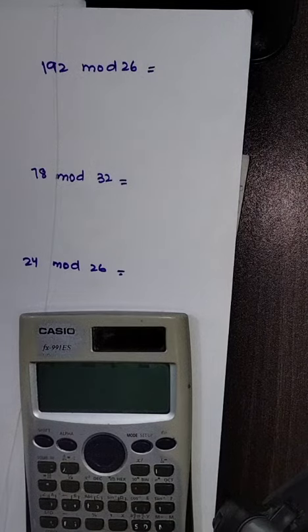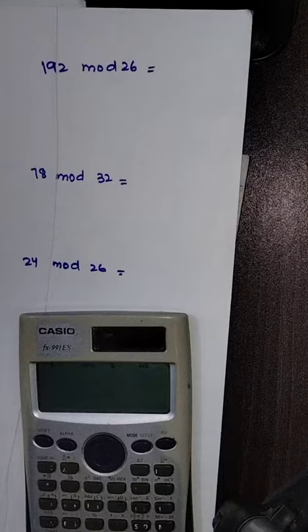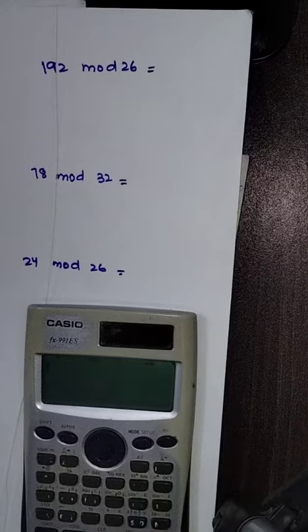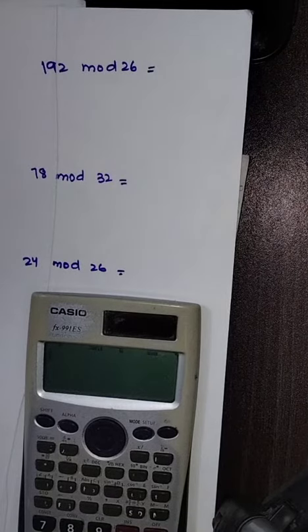In this video we will discuss how to take mod using a scientific calculator. We have three questions here: 192 mod 26, 78 mod 32, and 24 mod 26. So we are going to find out 192 mod 26 first.